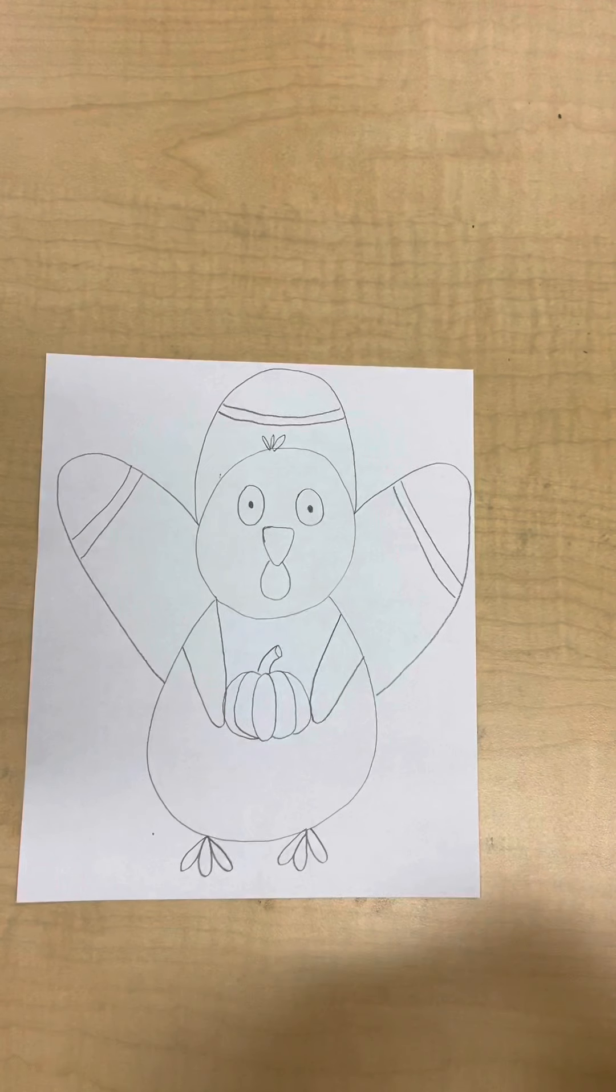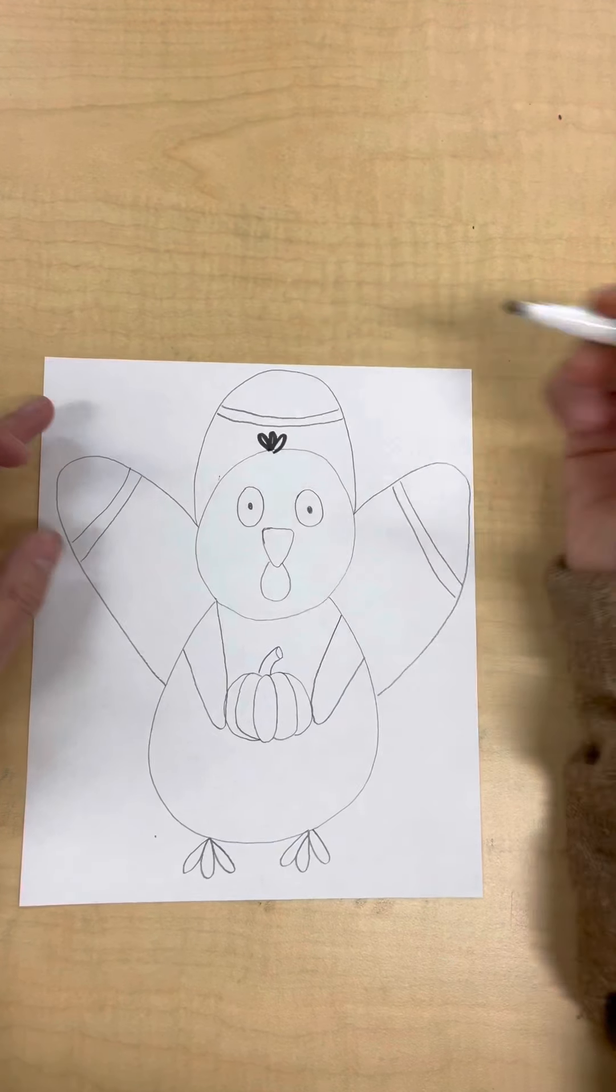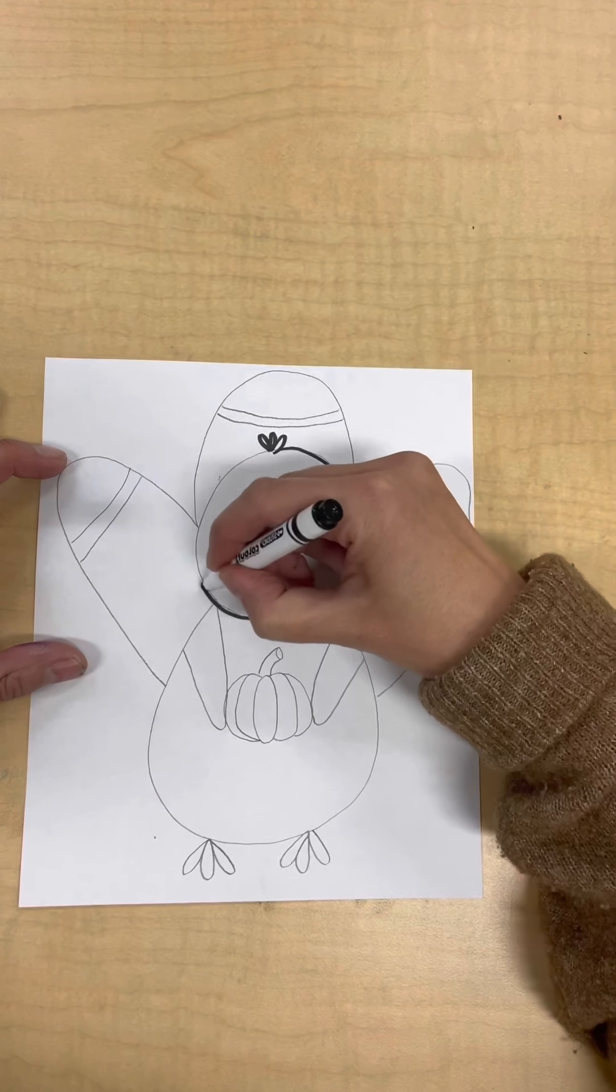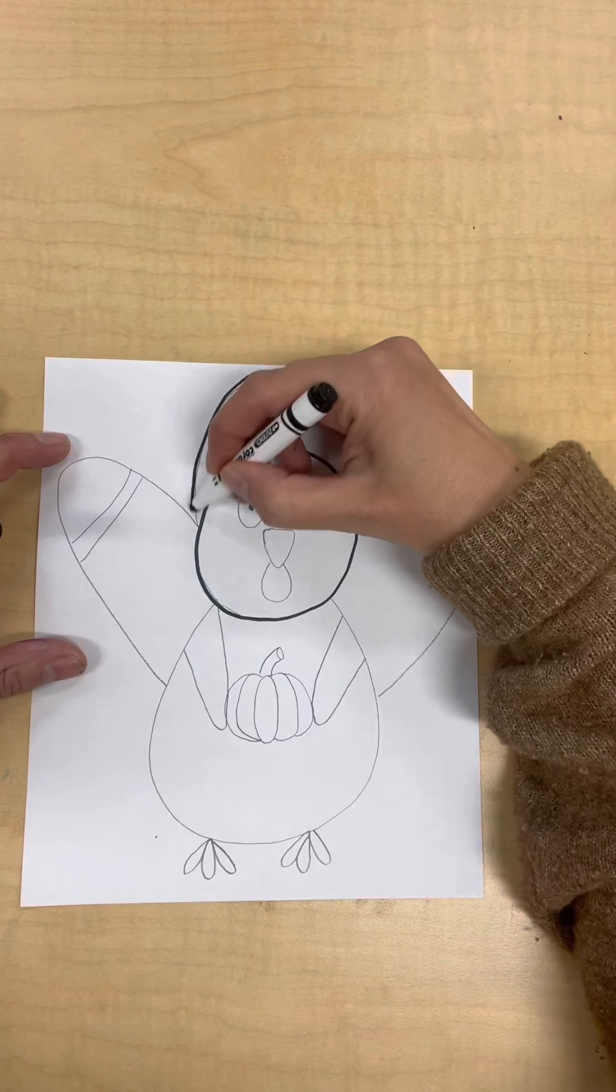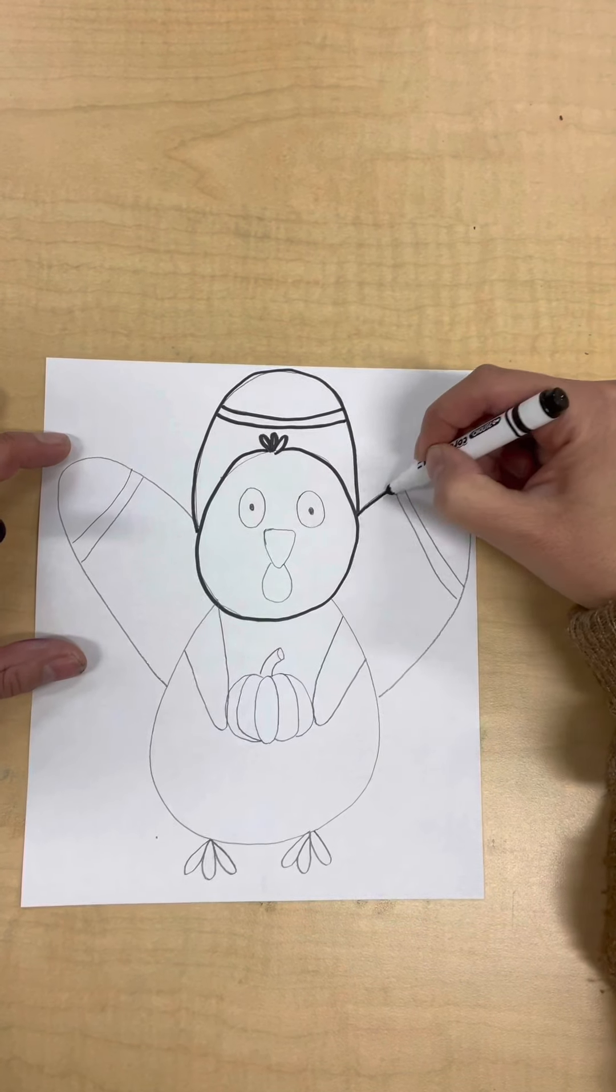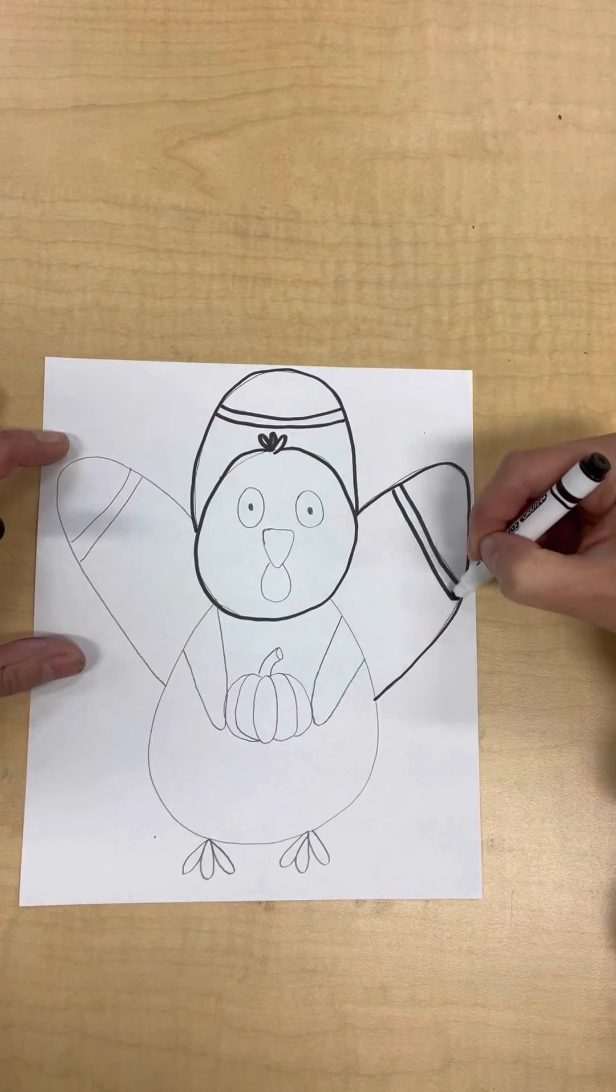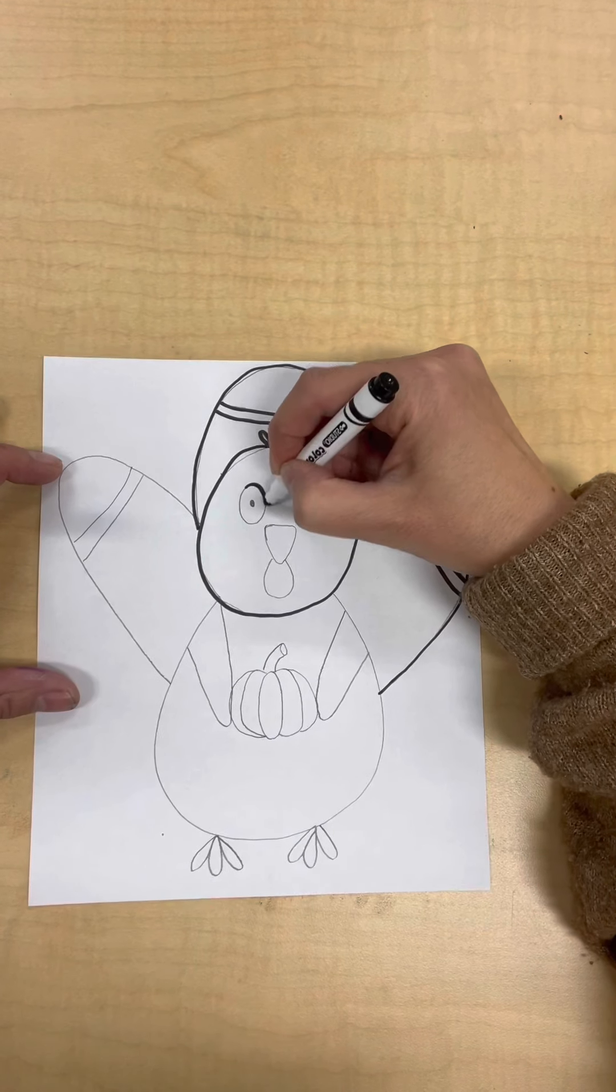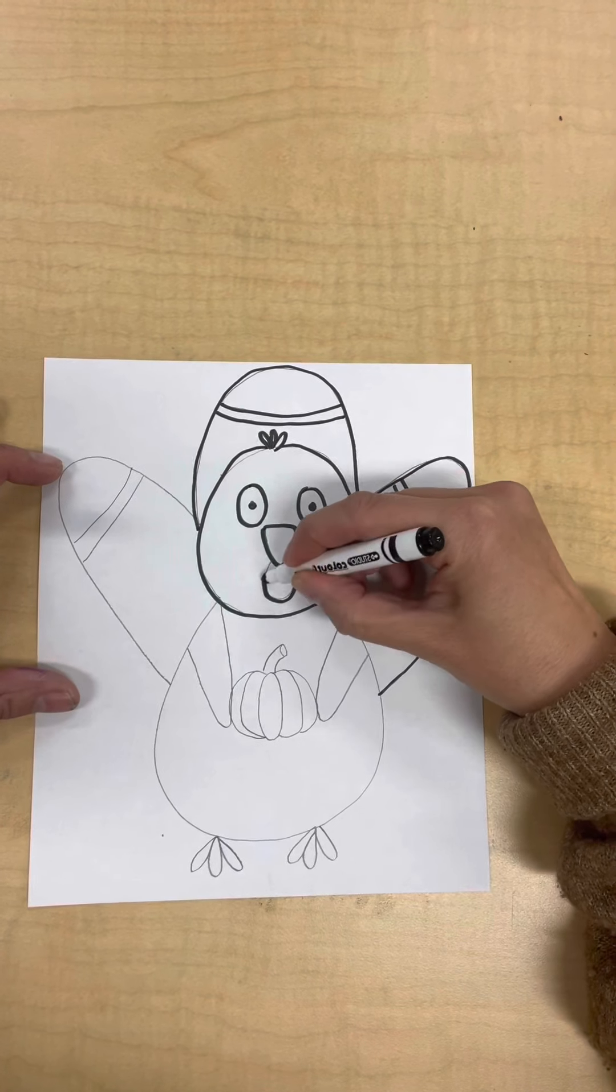Now what I'm going to do is I'm going to take my black marker and I'm going to outline all of my pencil mark. I'm going to come around like this and just outline everything in black. I like it to kind of stand out. You've done such a good job with your drawing that I want to now outline it so that it really stands out.